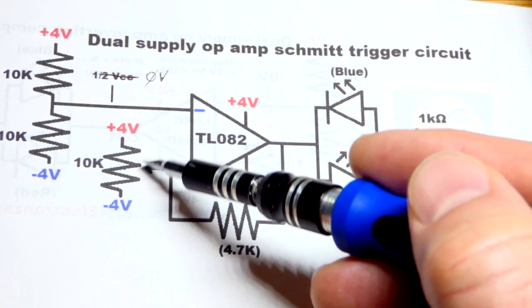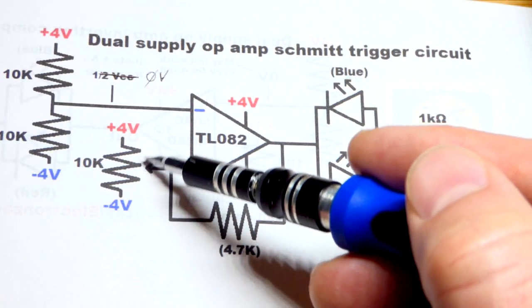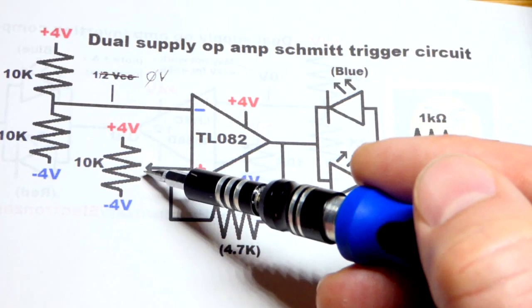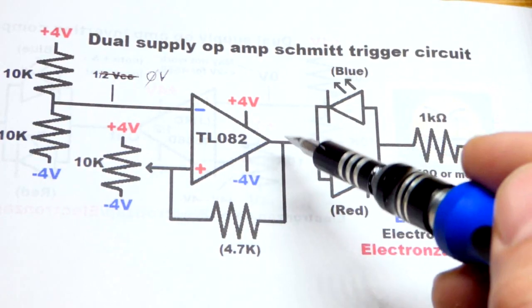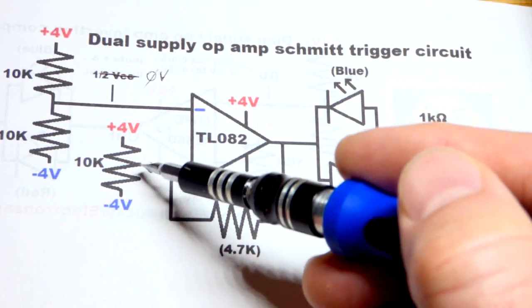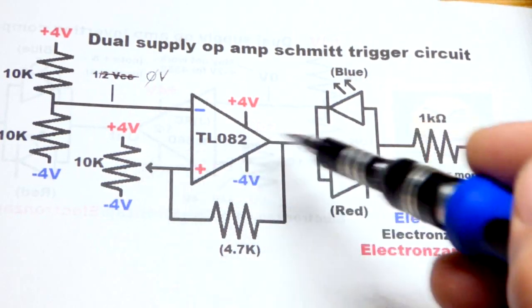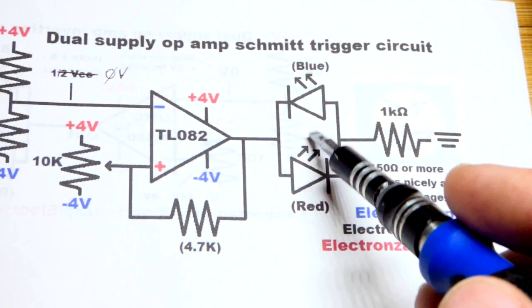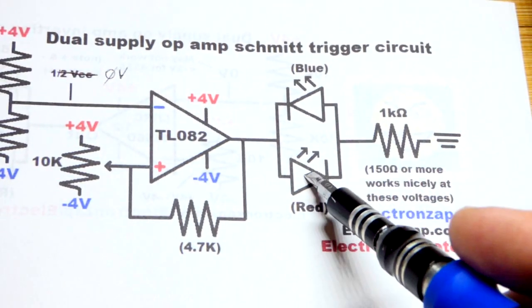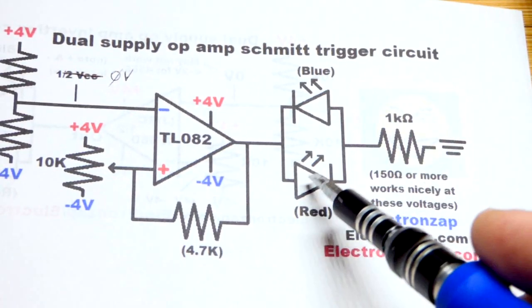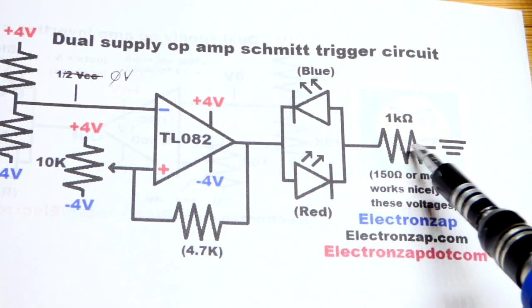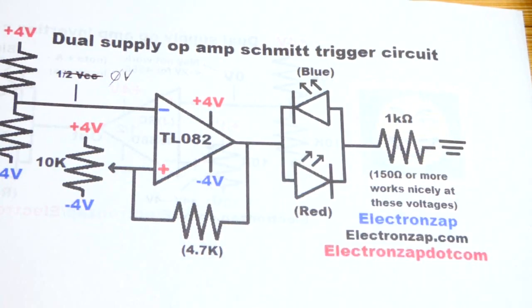That's a range where the trim pot will be set where the output will stay where it is, either high or low. There's not a one specific point where the output switches high or low. We have at the output a polarity indicator, which is a red LED going one way and a blue LED going the other way.